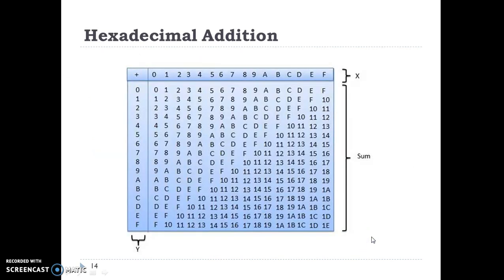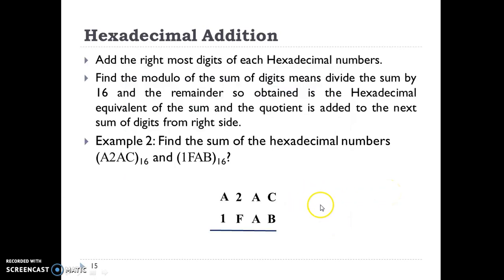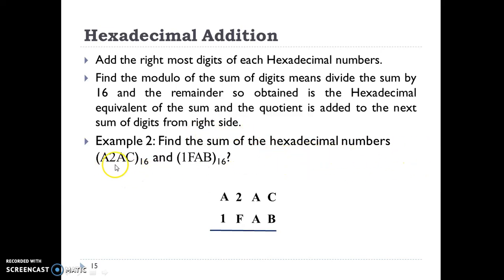Next is the hexadecimal number system. Again in the hexadecimal number system we could make a chart, but this is very difficult to use. So again we use the familiar procedure: find the modulo of the sum of digits — divide the sum by 16. The remainder so obtained is the hexadecimal equivalent of the sum, and the quotient is added to the next sum of digits from the right side. There is an example of finding the sum of hexadecimal numbers FAC and FAB.